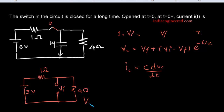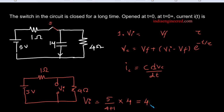The initial voltage is found using the voltage divider: the current through the resistors is 5 divided by (4 plus 1), and the voltage across the 4 ohm resistor is that current times 4. That is 5 divided by the sum of resistances, times the resistance across which we want the voltage — that gives 4 volts. So V_initial equals 4 volts.